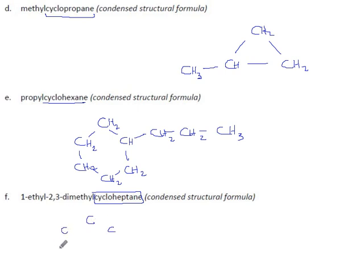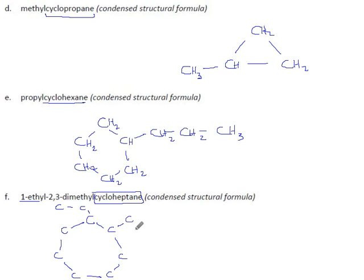The big finish: cycloheptane — we don't draw heptagons very often, but there it is. Seven carbons: one, two, three, four, five, six, seven. Carbon number one can be wherever I want; I'll put it at the top and go clockwise. Carbon number one has an ethyl group on it — C, C. Carbon number two has a methyl group on it. Carbon number three has a methyl group on it. They ask for condensed structural, so we fill in the hydrogens.